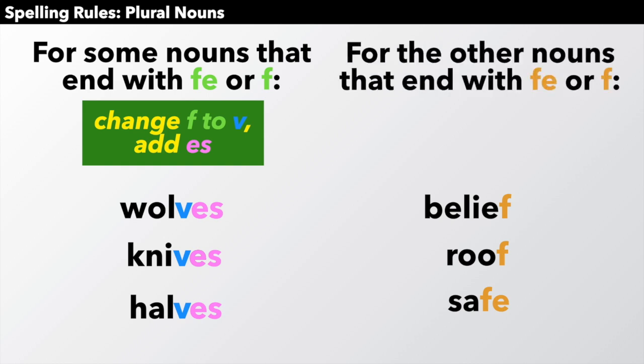But, sadly, for the other nouns that end with FE or F, we don't do that. We just add s to some nouns. Beliefs, roofs, safes. Sorry, that's English.